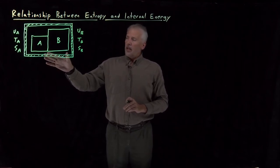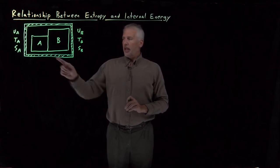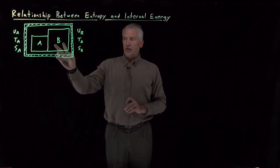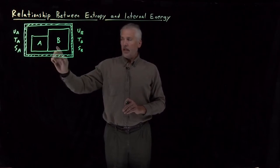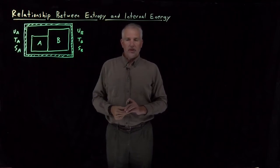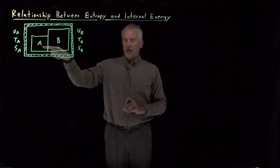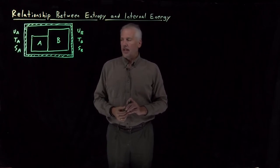And simple enough system, close enough to systems that we have everyday experience with, that we kind of have an idea what's going to happen. If the temperatures, for example, are different, if this system is hotter than system A, then the temperature of B will drop and the temperature of A will increase. In other words, energy will flow from the hotter one to the colder one, changing the temperatures of the two systems as that happens.